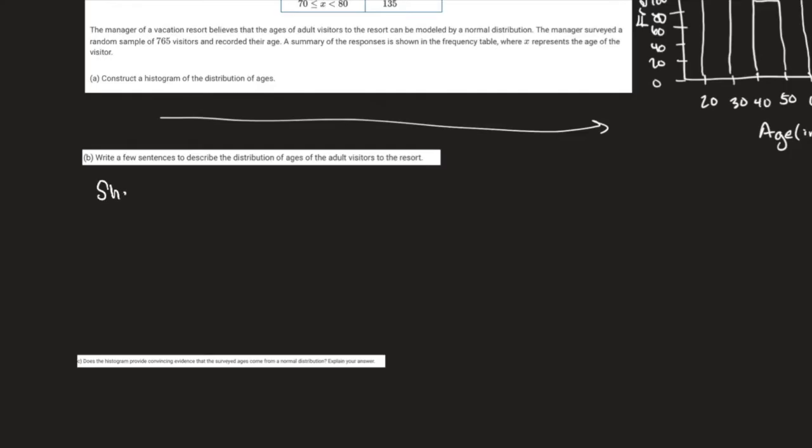Okay, so the second part, a little bit more involved, right? They didn't give you as much free stuff in this example, but it says write a few sentences to describe the distribution. Let's go way back into chapter four and five. In this example, we're going to talk about shape, center, and spread.